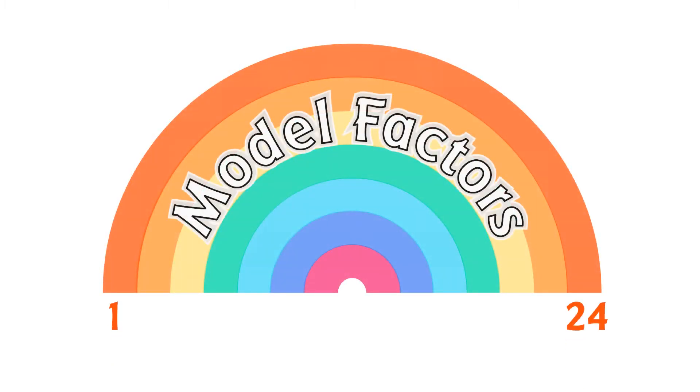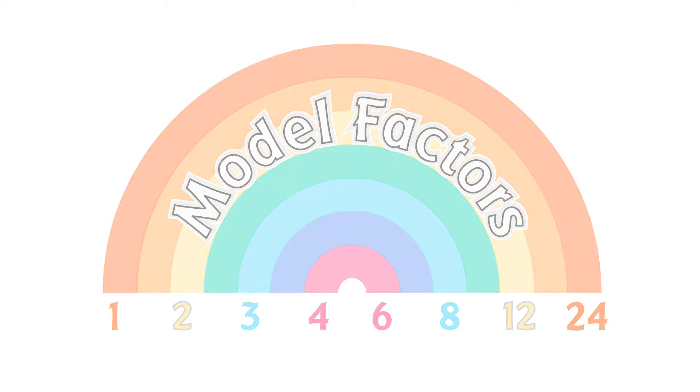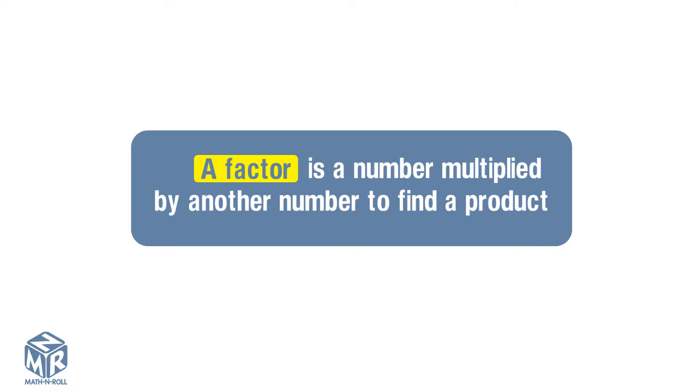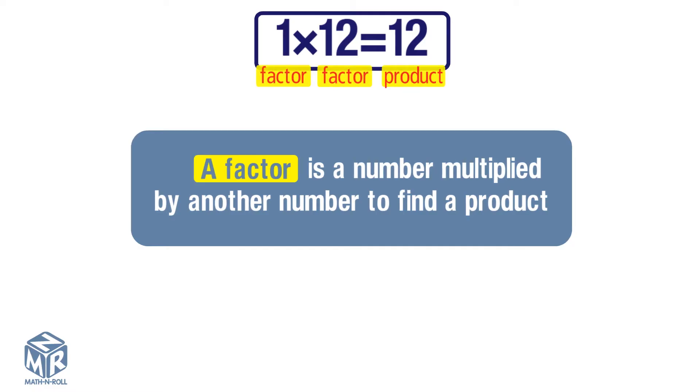Model Factors. A factor is a number multiplied by another number to find a product. Every whole number greater than 1 has at least two factors, that number and 1. In this multiplication fact, 1 and 12 are factors and 12 is the product.